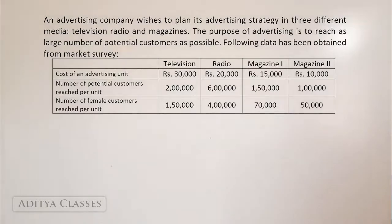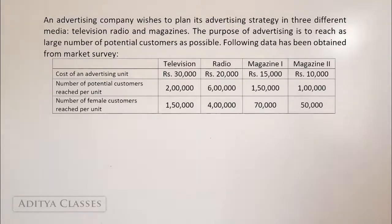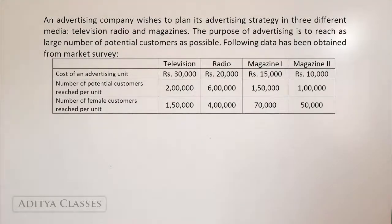Looking at this table: number of potential customers reached through magazine two are one lakh, number of female customers reached through radio are four lakh, through magazine one are seventy thousand, and so on. This table can be interpreted very easily.